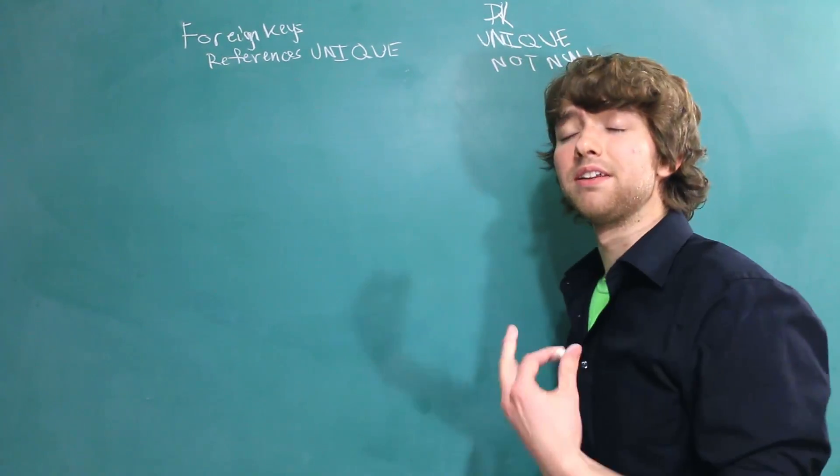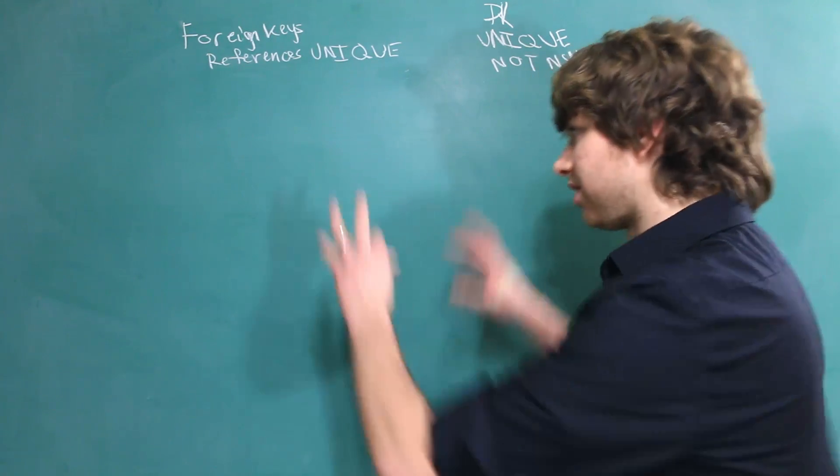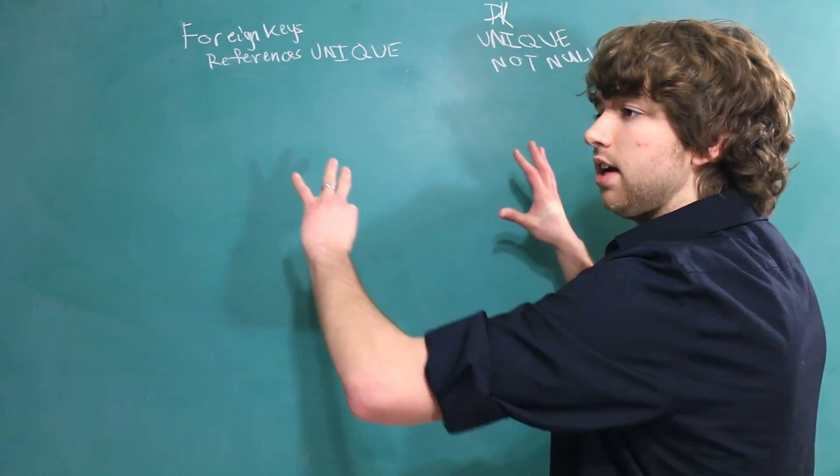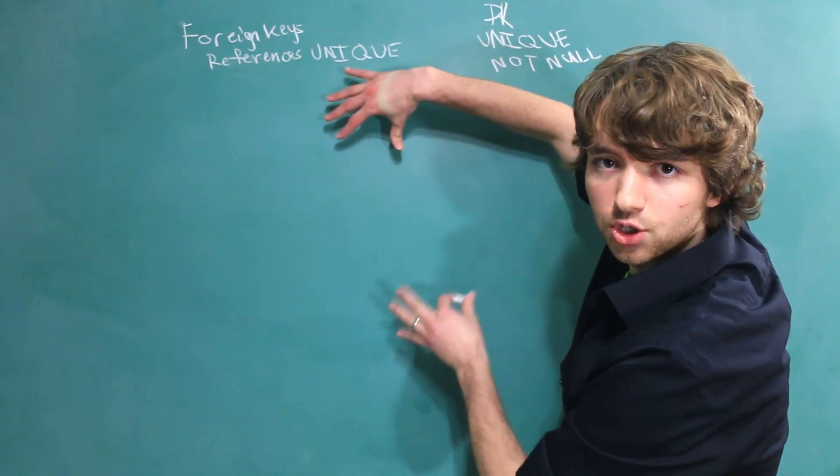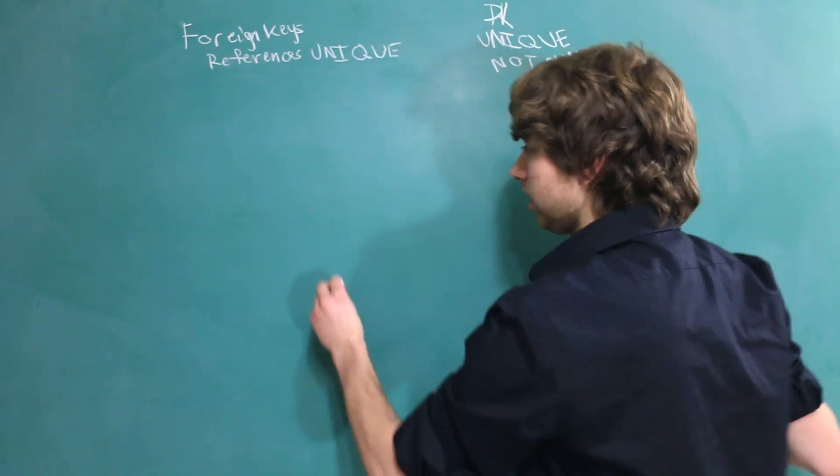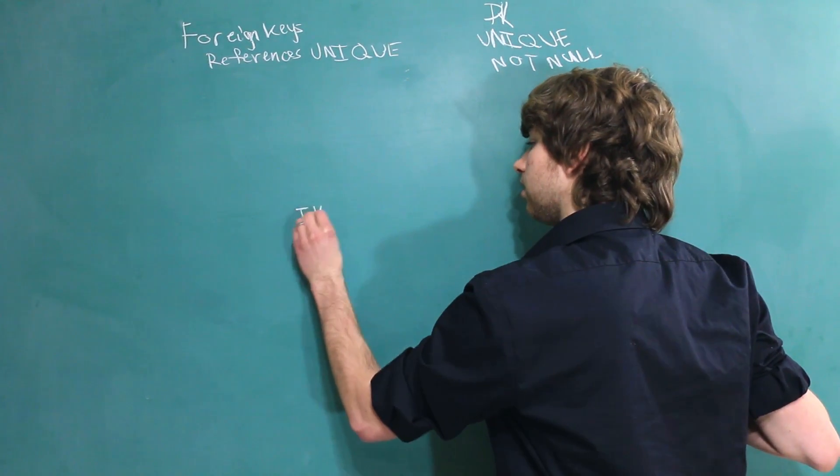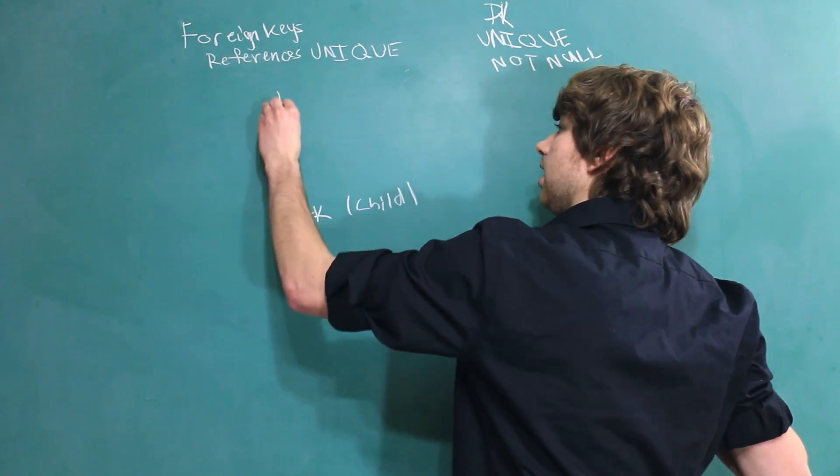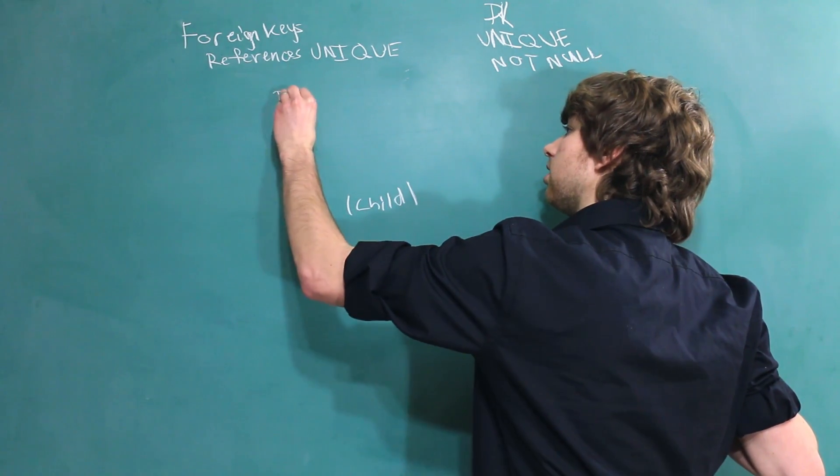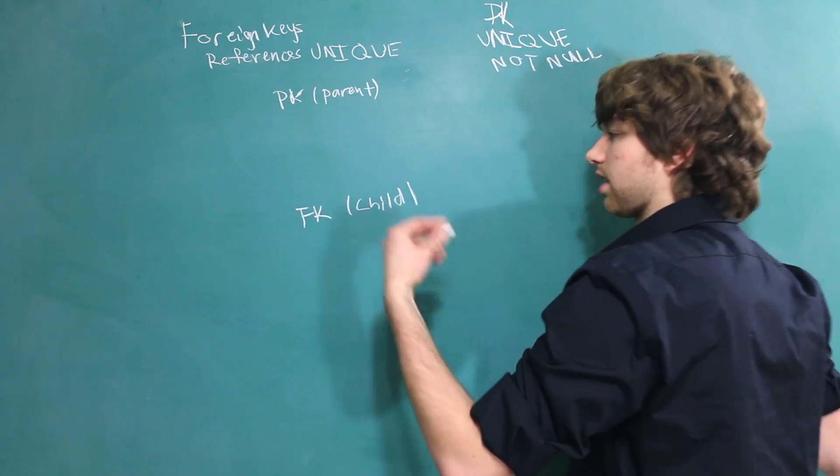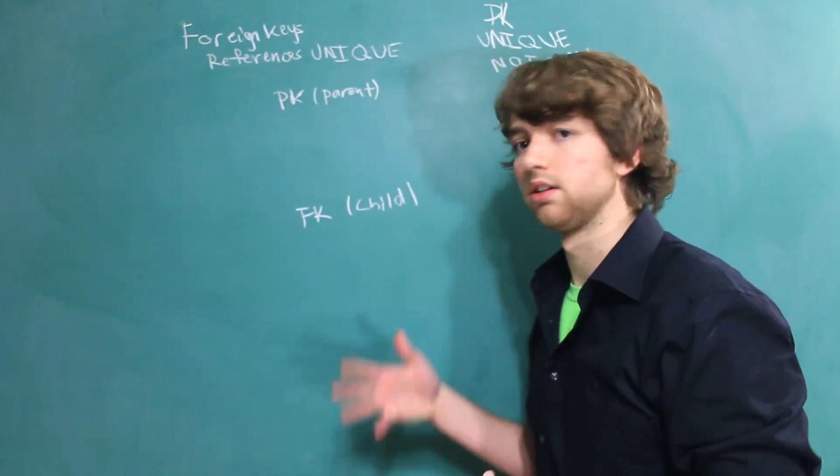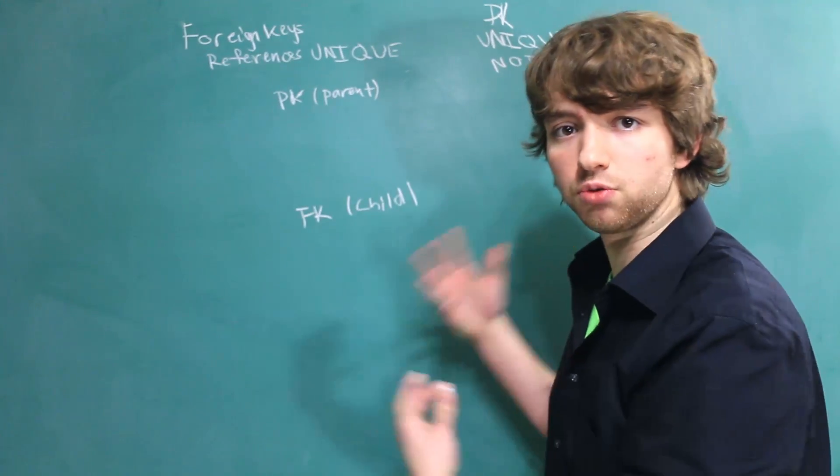So, the easiest way to think about this is rather than having tables referenced this way, it's to rotate the whole thing and create parents and children. So, the foreign key down here is the child. PK up here, the primary key, is the parent. This allows us to think about things a little bit differently, put this into like a family tree kind of thing.